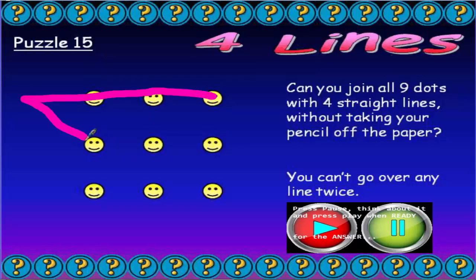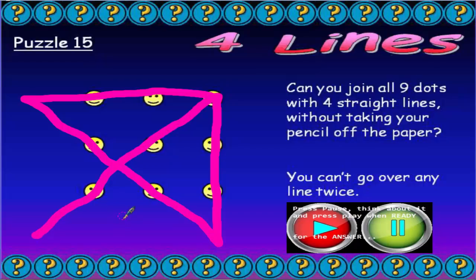Then you could go diagonally down through these dots but keep going, then up through these dots, and then finally diagonally through the remaining two dots. Again, four straight lines, or kind of straight—I know this one's a bit wiggly but I'm not using a ruler. Four straight lines, we haven't taken our pencil off the paper, and we didn't go over any line twice.